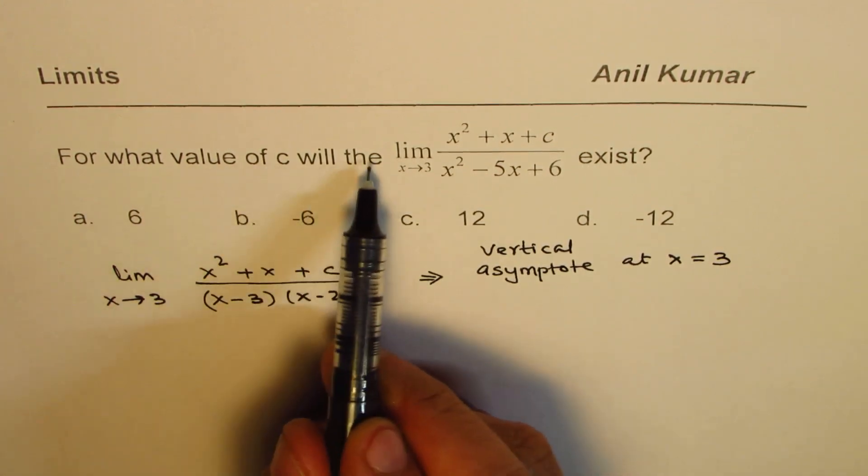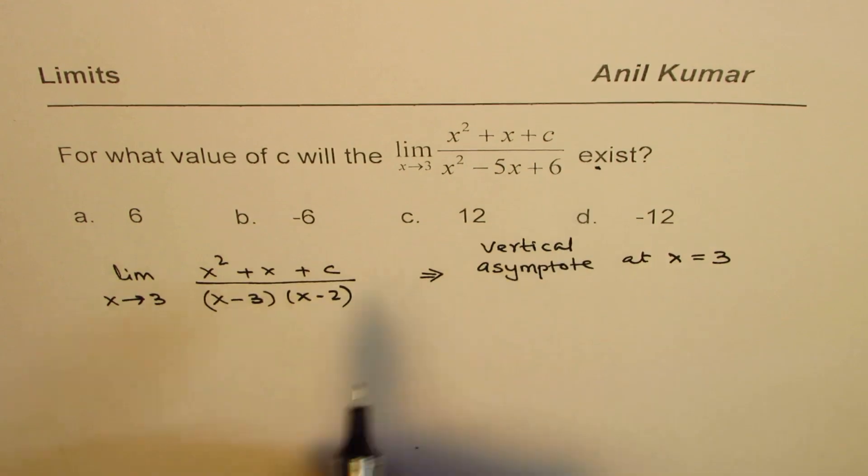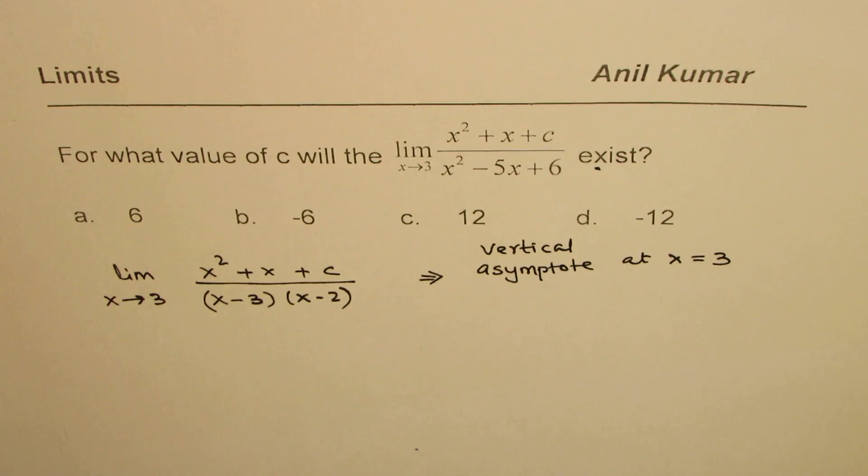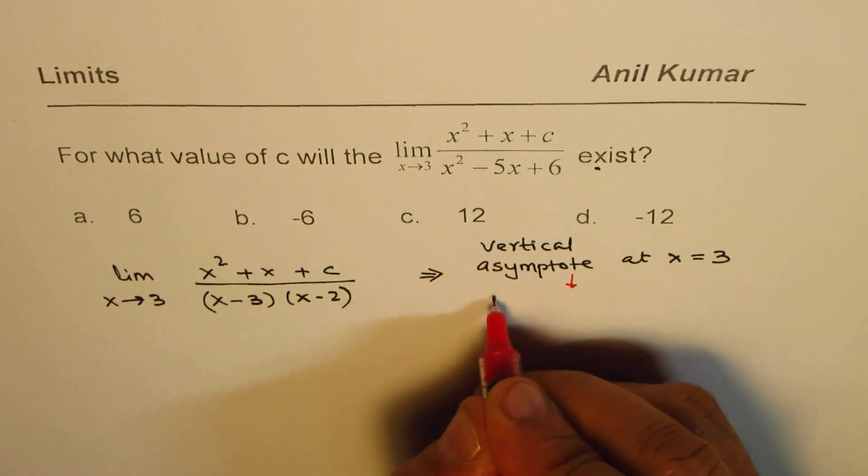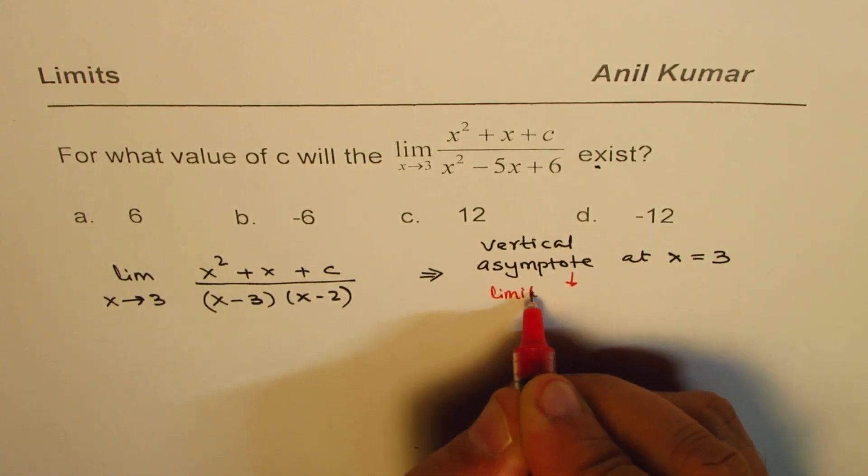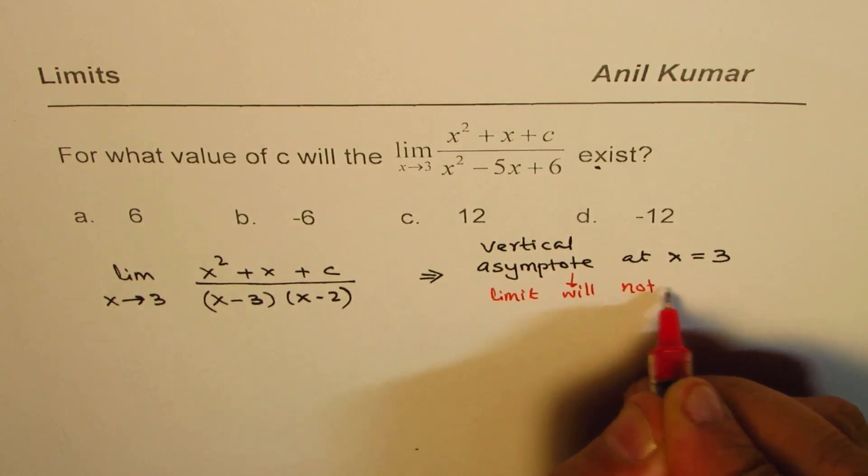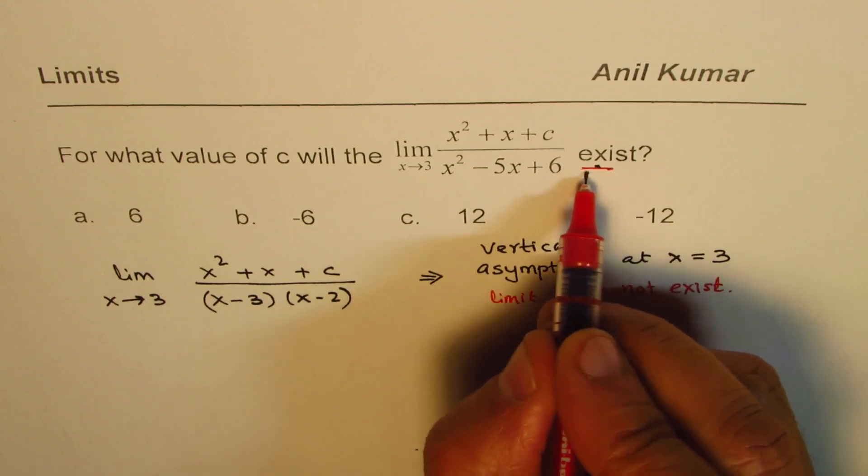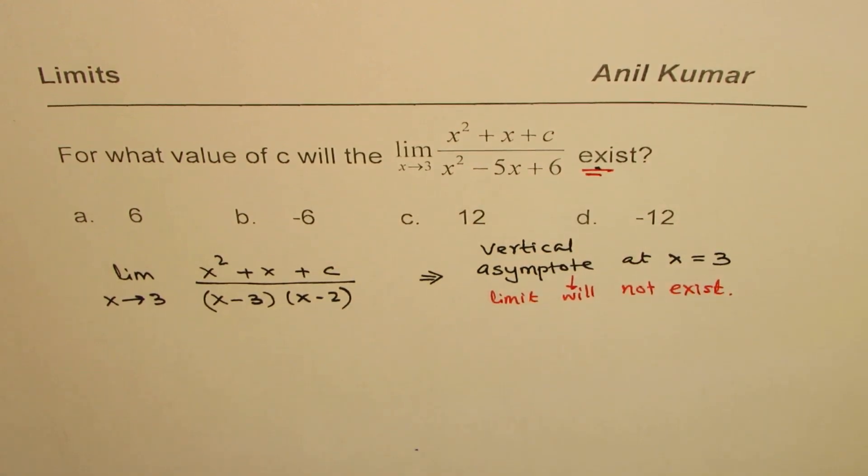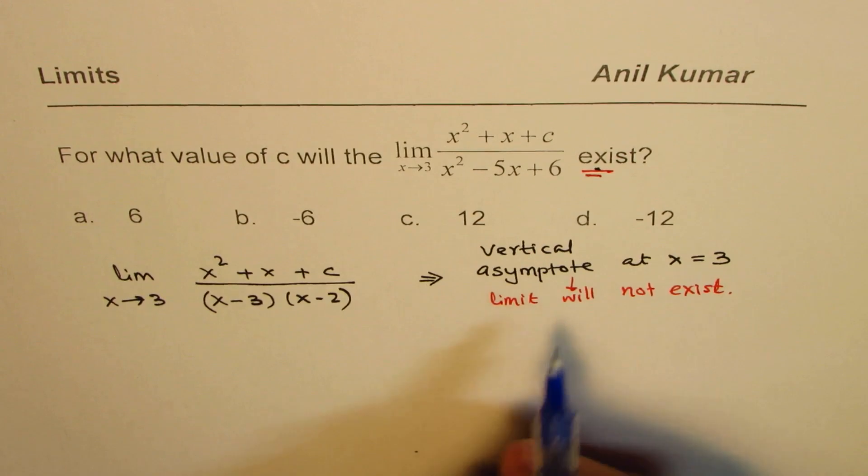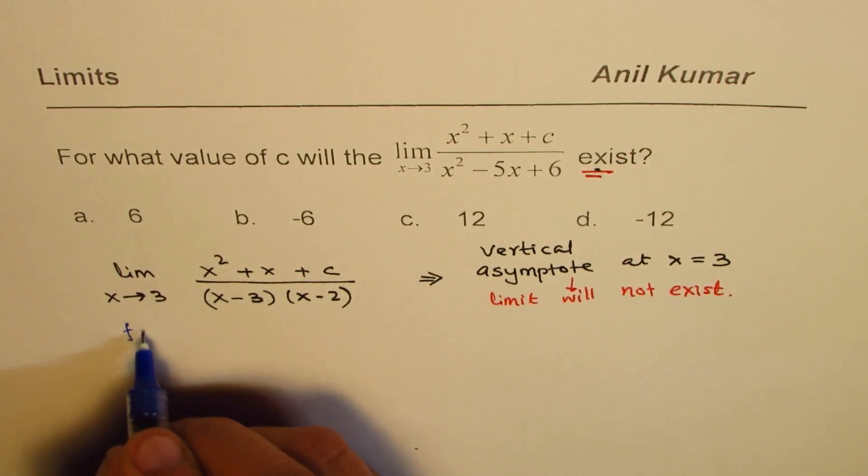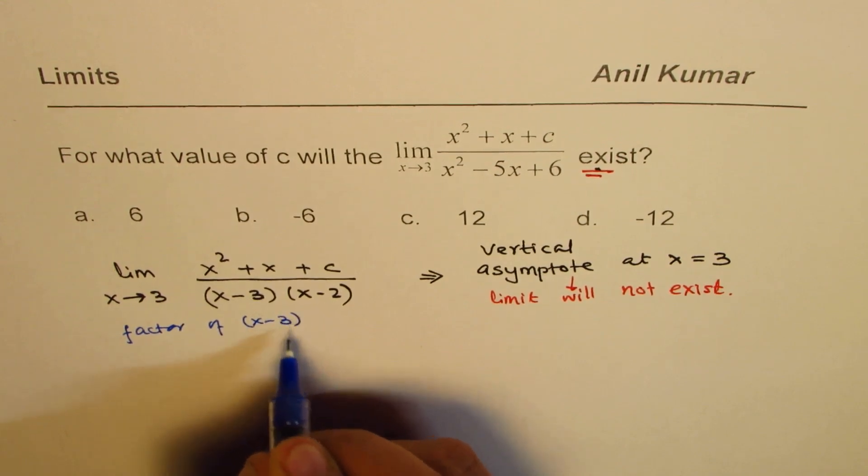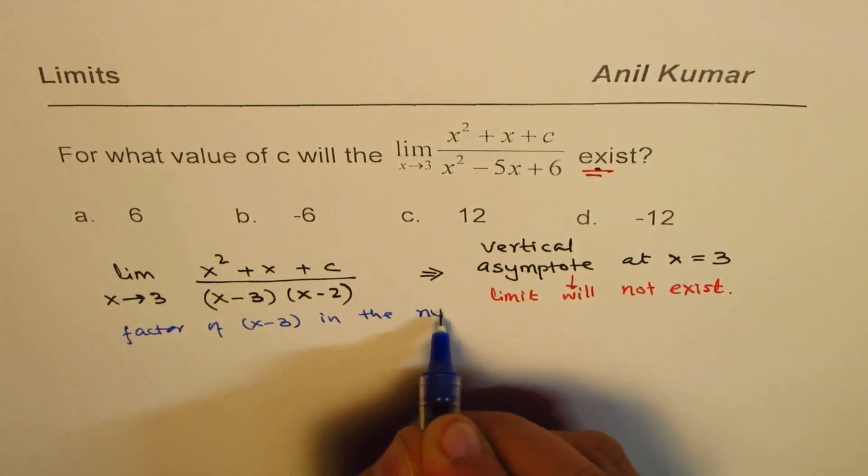For what value of c will the limit exist? Now, if you have a vertical asymptote, then the limit will not exist. This is what it means. But we want it to exist. So what can you do? That is possible if you have a factor of x minus 3 in the numerator also.